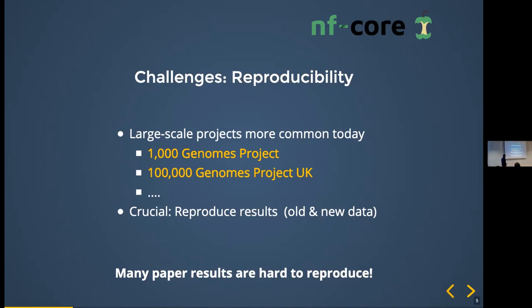Many paper results are really hard to reproduce. It's tough if you have to download data from somebody, and sometimes people don't give full details about what parameters they used or what tools they used. There's no standard for this. Ideally, everybody would publish data together with the parameter software and analysis tools they used, at least in a way that people can really reproduce what they've been doing. But that's unfortunately not the reality in many cases.